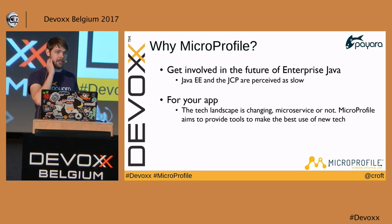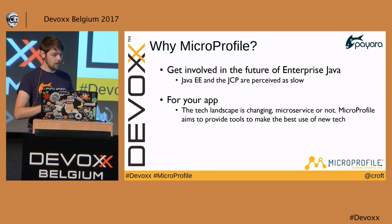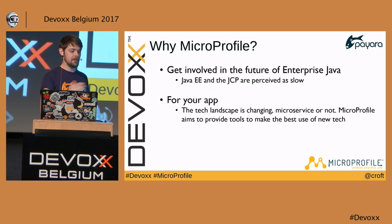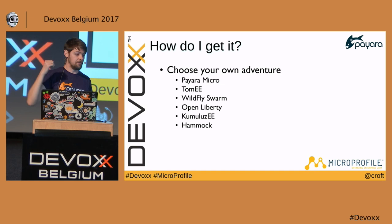Between Java EE 7 and Java EE 8 you might think nothing happened, but there have been tons of innovation from vendors — Red Hat, IBM, Tomitribe, and Payara have all come up with new ways of doing things. The tech landscape is changing rapidly, and MicroProfile aims to give you a new toolbox to take best advantage of all that.